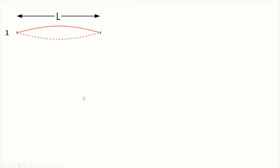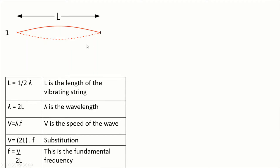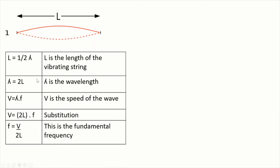Now, how are we going to incorporate tension and density of materials to calculate speed and other variables of a standing wave or harmonic? Remember the fundamental frequency — in this string, half a wavelength can fit, so the wavelength is two times the length of the string. Using the speed of the wave, which is wavelength times frequency, we can derive the final formula: fundamental frequency equals speed over two times the length.